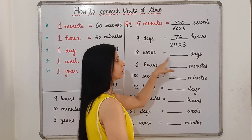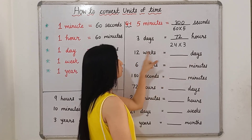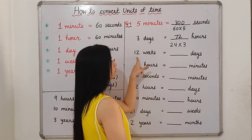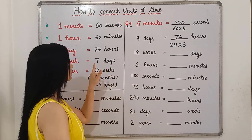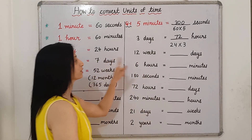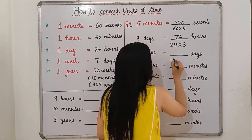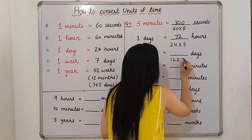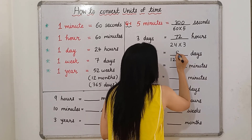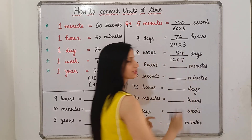12 weeks is equal to how many days? We know that in 1 week there are 7 days, so in 12 weeks it will be 12 multiplied by 7, which means 84 days.